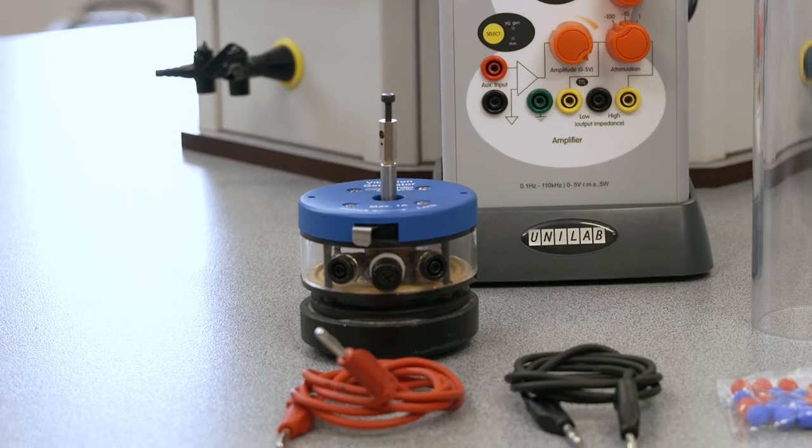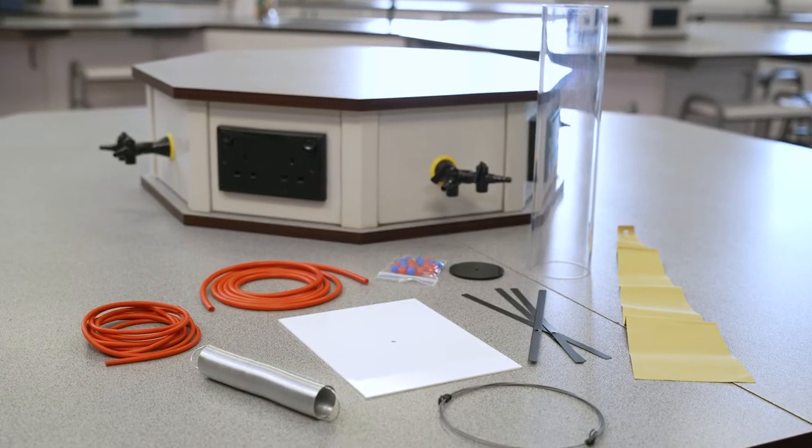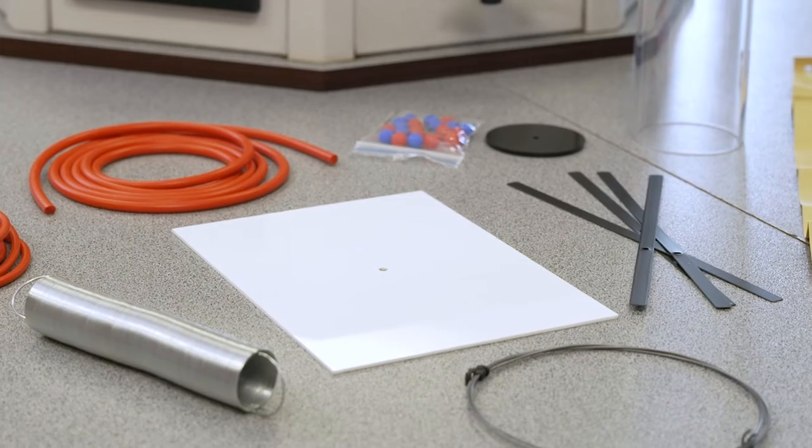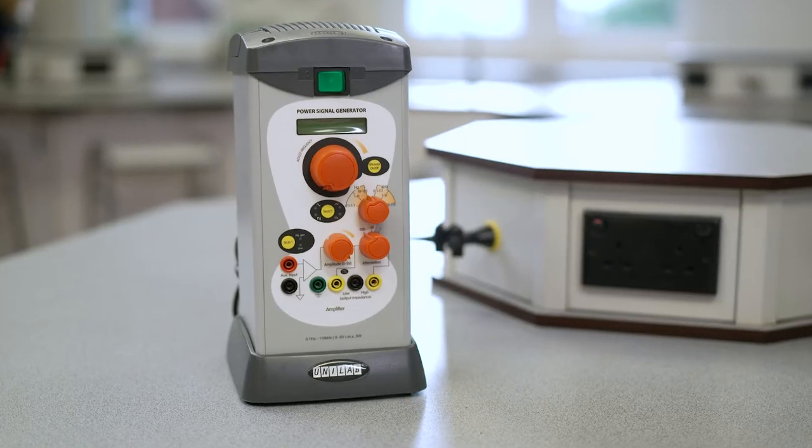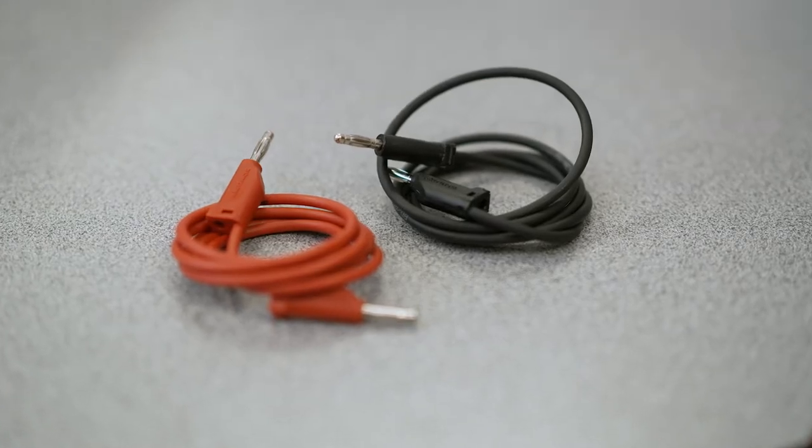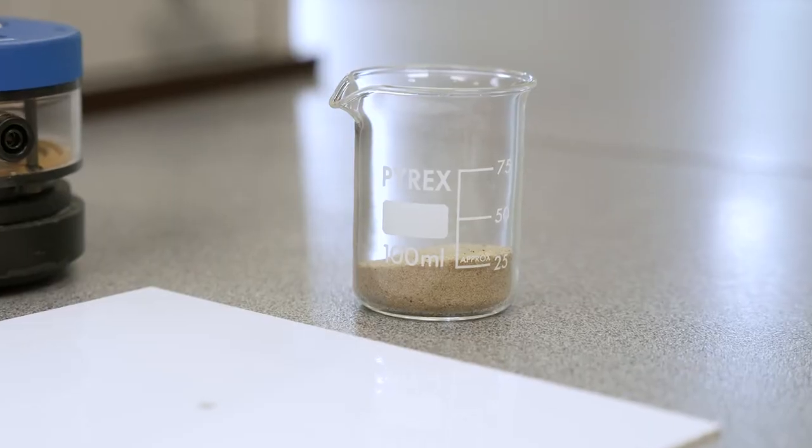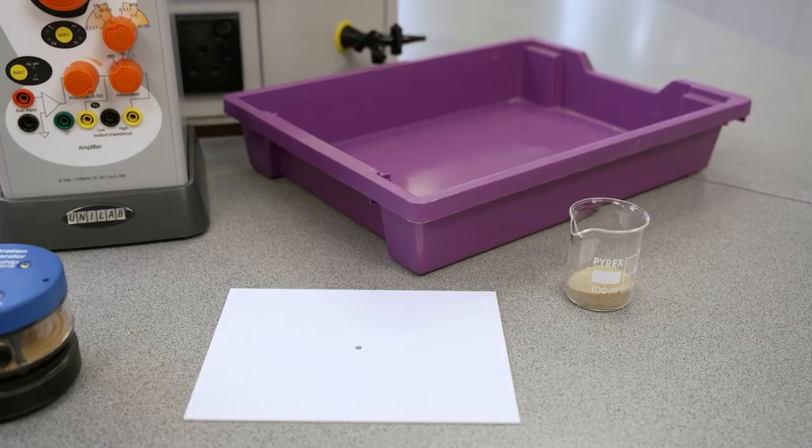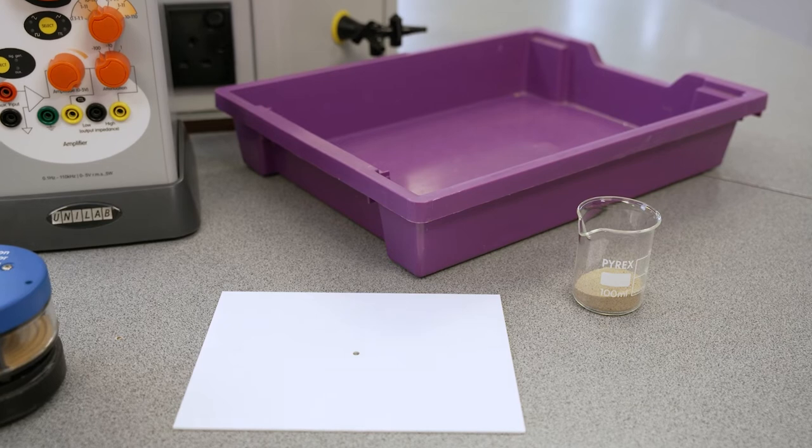For this experiment you'll need the Philip Harris vibration generator with accessory kit containing the Chladni plate, a Unilab power signal generator, four millimeter connecting leads, sand or another freely running powder, and a tray to collect any excess sand or powder.